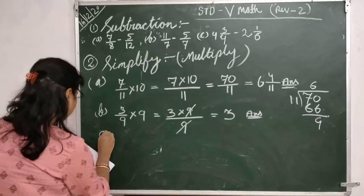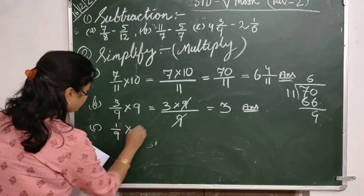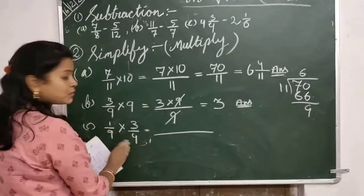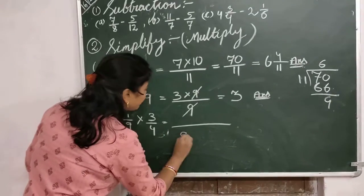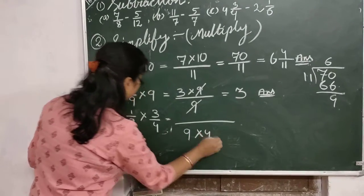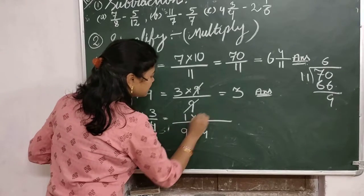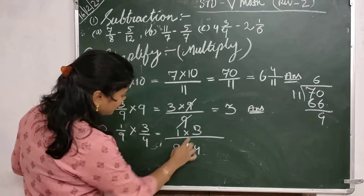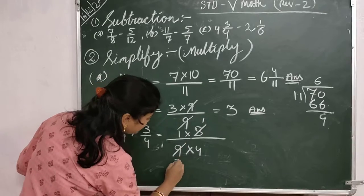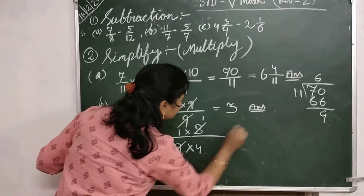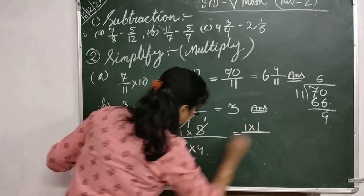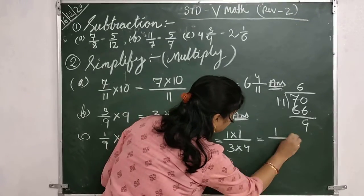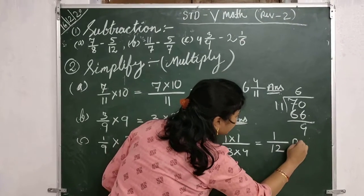Then the next one is 1 by 9 into 3 by 4. Here both numbers are fractional. You have to multiply 9 with 4, and 1 with 3. Now simplify: here 3 and 9 — 3 times 1 is 3, 3 times 3 is 9. So 3 cancels into 1 and 3. Here 1 into 1 remains, and here 3 and 4. So your answer is 1 into 1 over 3 times 4, which is 1 by 12.